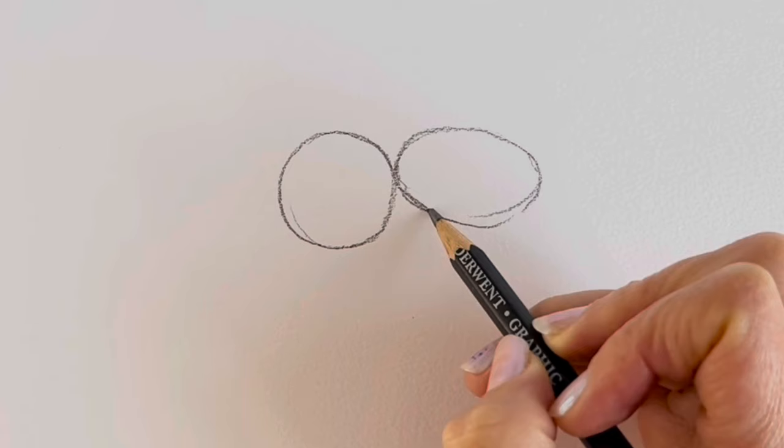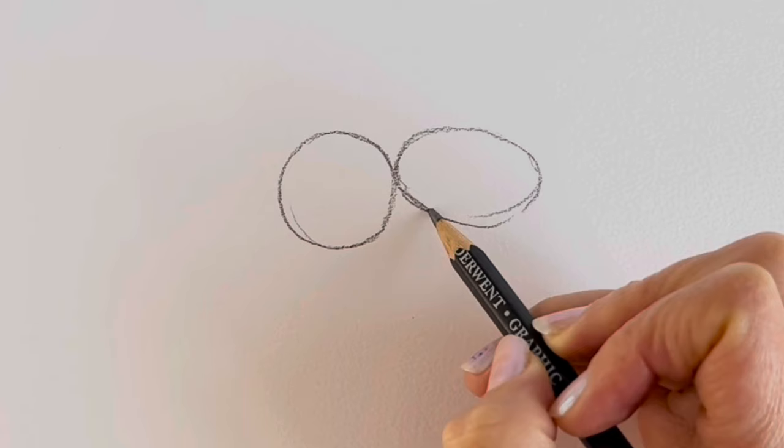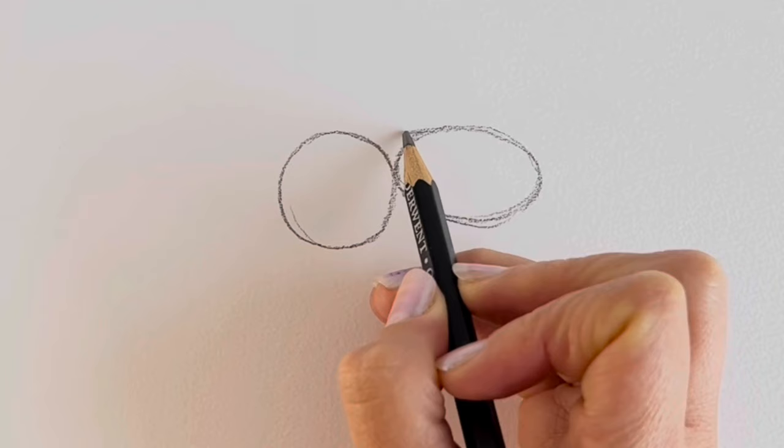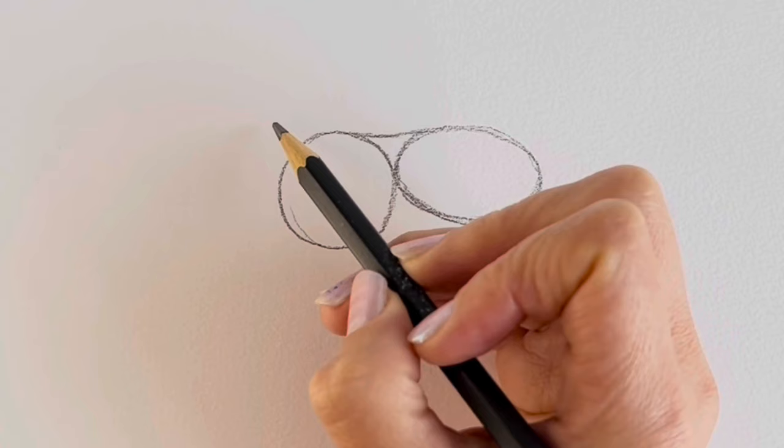It doesn't have to be perfect. These are just preparatory shapes just to help us with the body. Sometimes what I do when I do these how-to videos, I watch them the whole way through and then go back and pause the video. So if I go too quickly, just pause the video. Draw a little line across, that's the back.